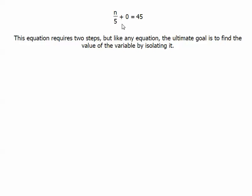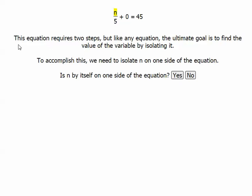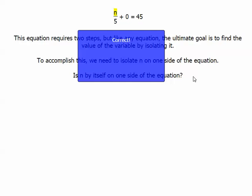You'll see this equation is n over 5 plus 0 equals 45. This equation requires two steps, but like any equation, the ultimate goal is to find the value of the variable by isolating it. To accomplish this, we need to isolate n on one side of the equation. So the first question is n by itself on one side of the equation? Clearly it is not, so I click no and I get correct.